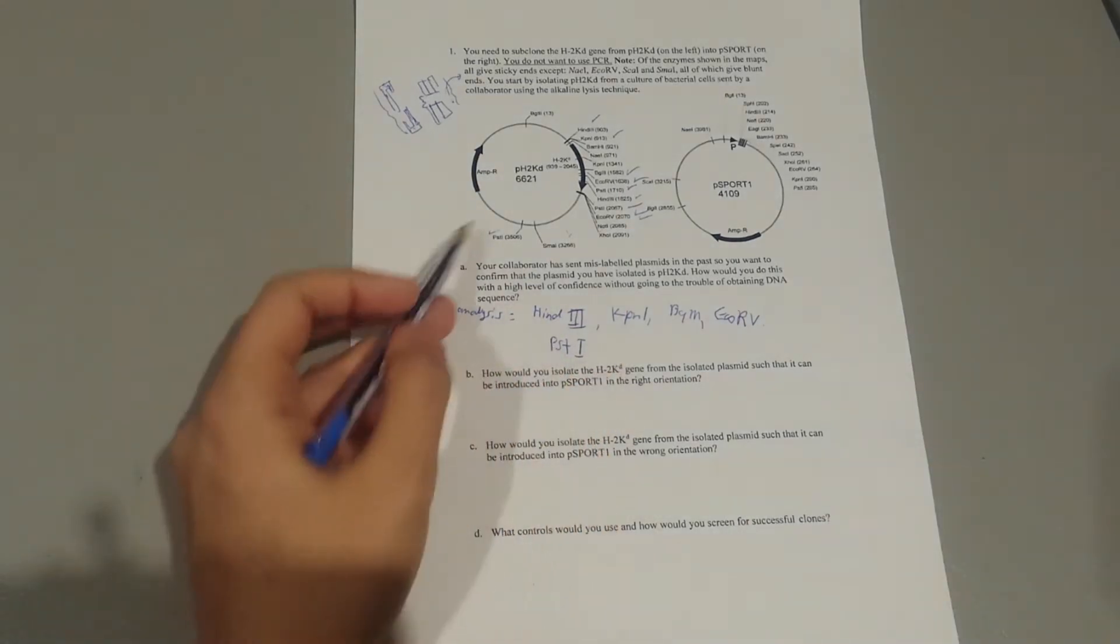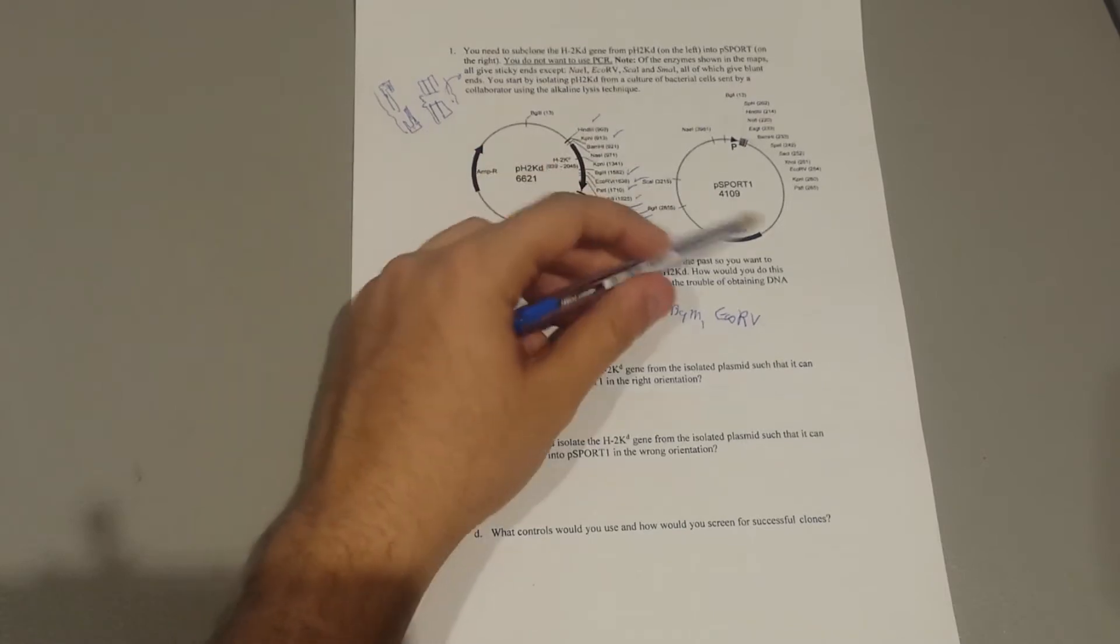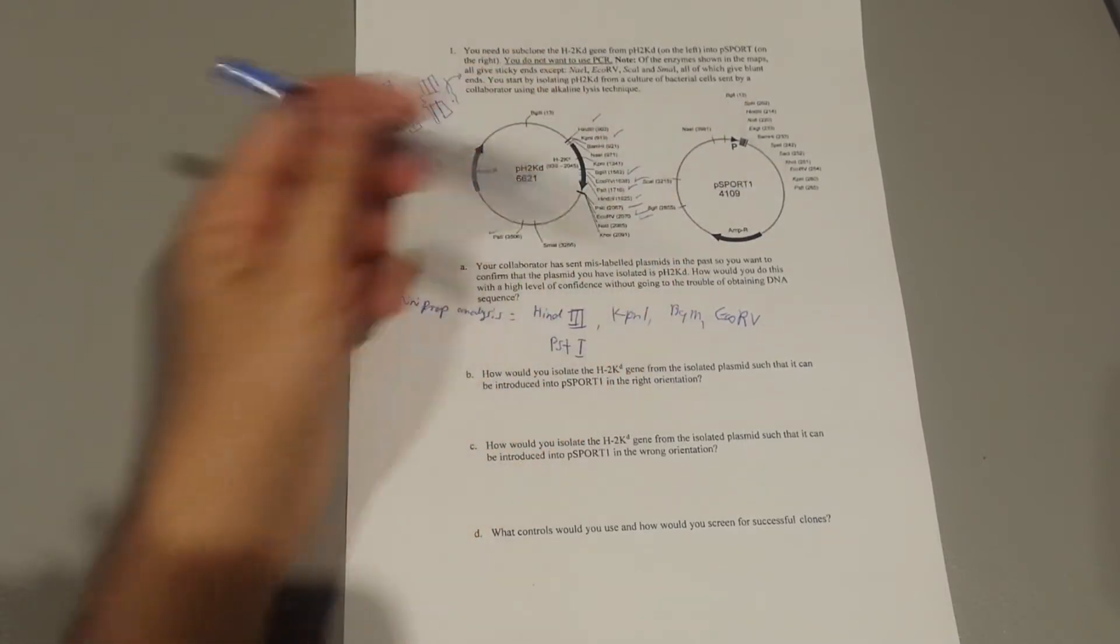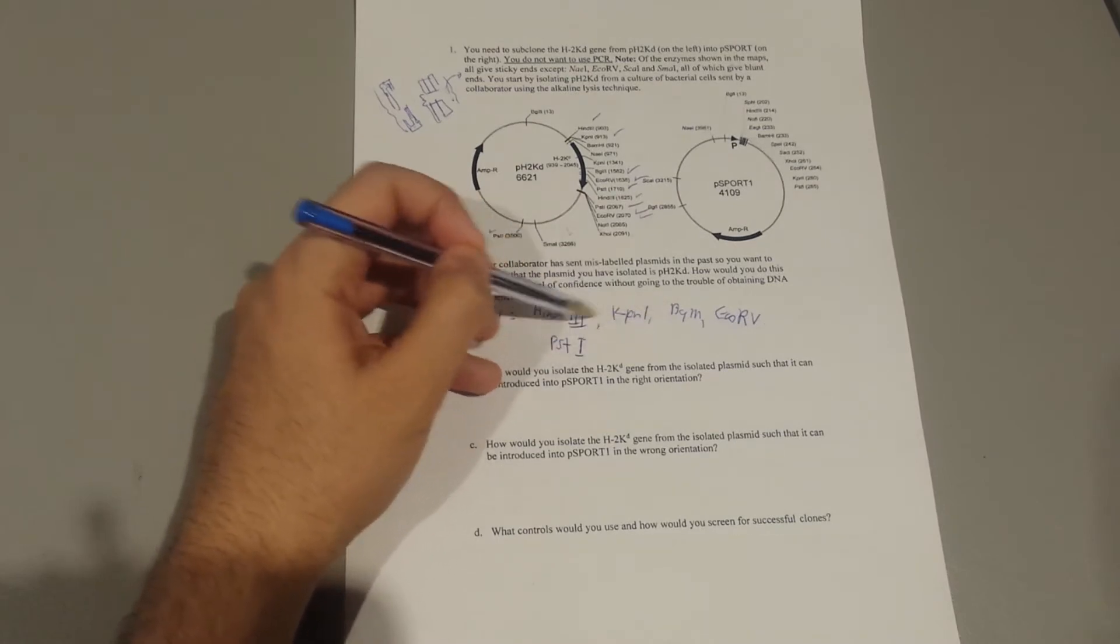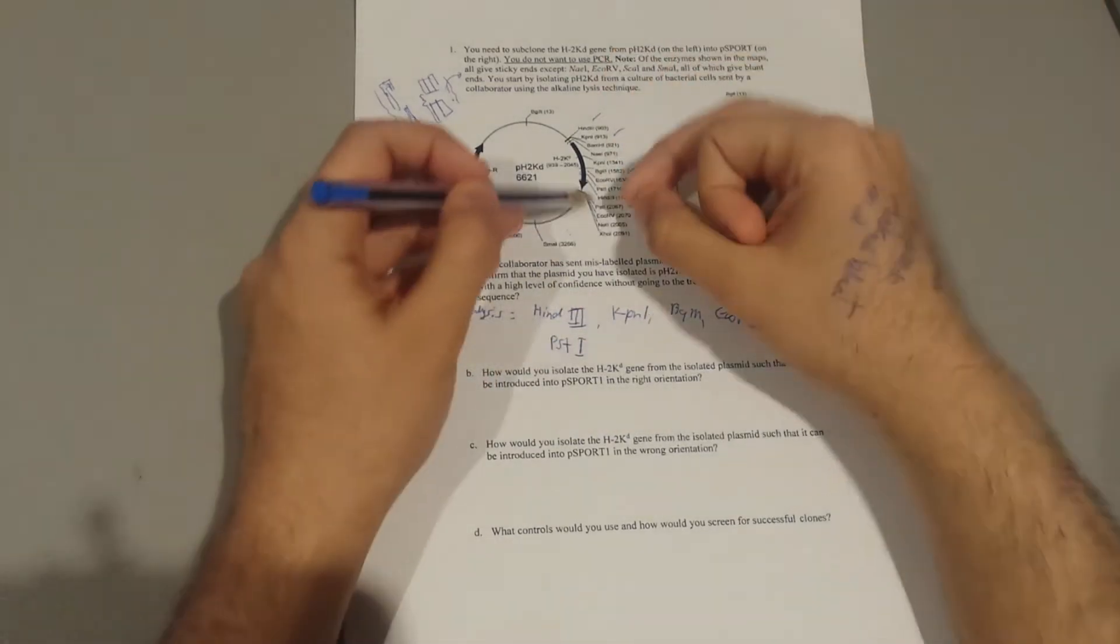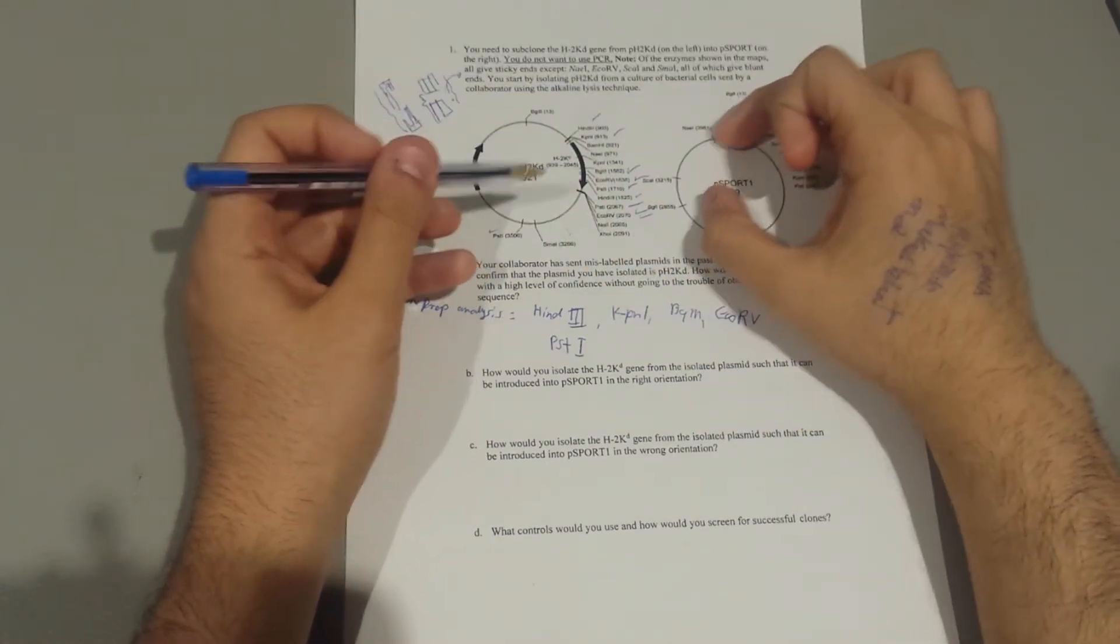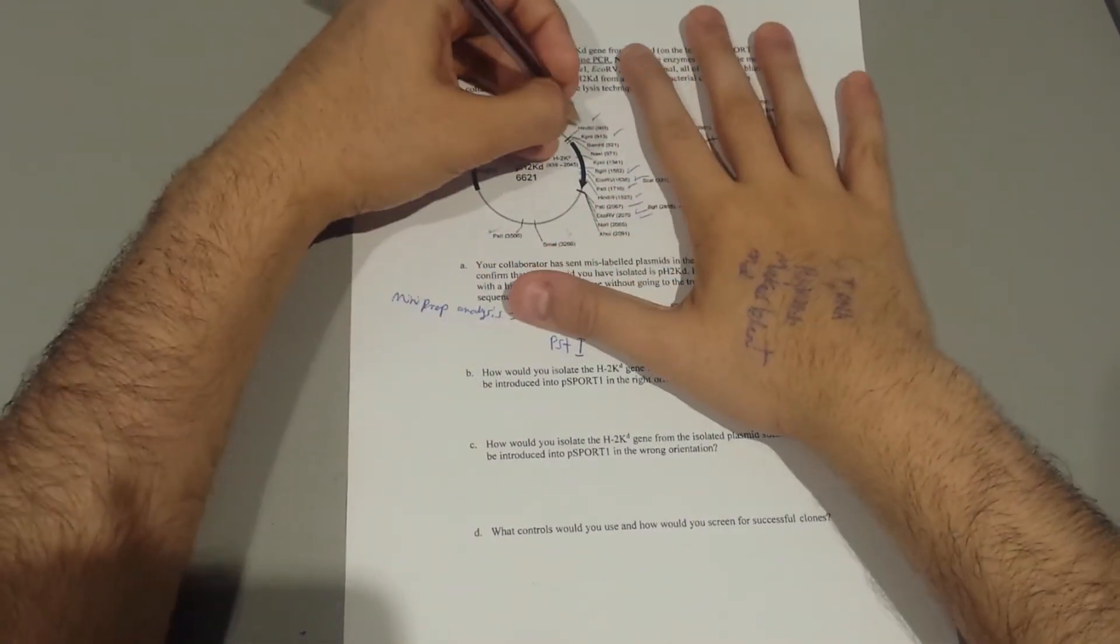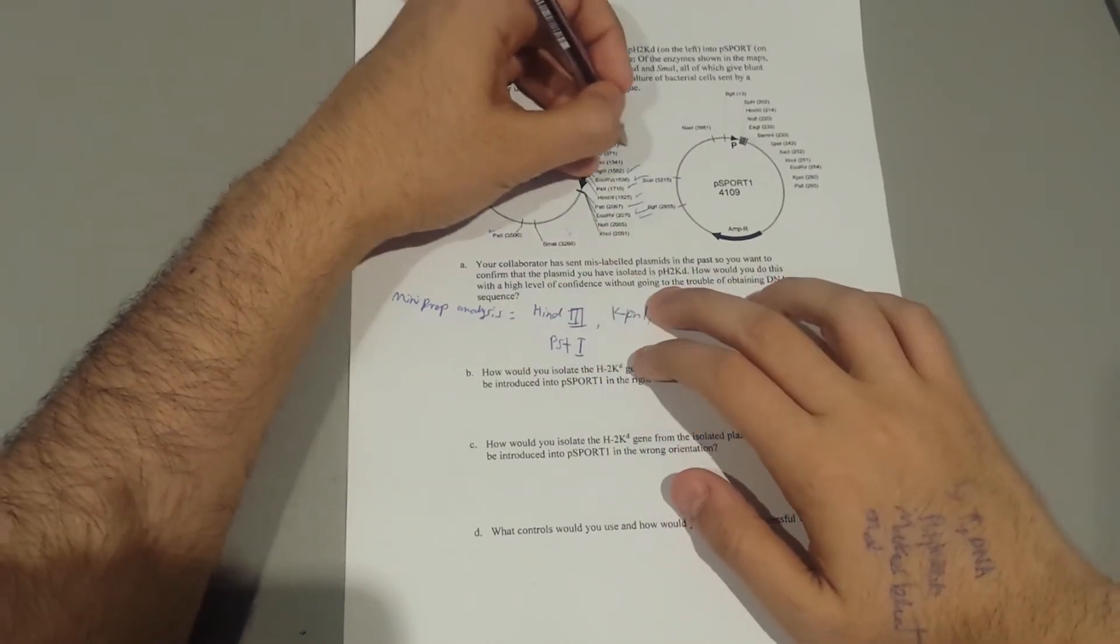Next question is asking which enzymes you're going to use to cut this specific gene so you can transfer it to this specific plasmid. In this case, you don't want to have a cut inside the gene, because you want to have the whole portion of the gene being transferred. So you're not going to use these five sites inside the gene, you have to ignore these.